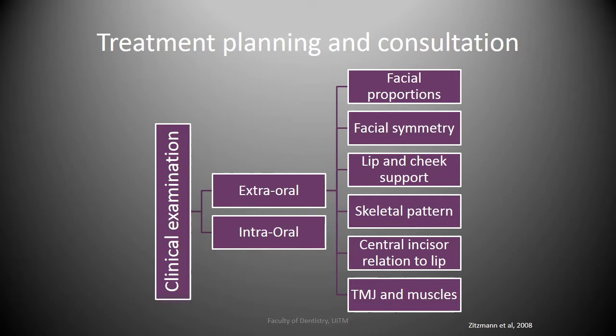Ideally, the lower third or lower facial height should be equal to the other thirds. The second is facial symmetry. The third is the lip and cheek support, whether sufficient or insufficient. The fourth is the skeletal pattern, which could be normal, prognathic, or retrognathic. The fifth is the position of the central incisors, evaluated at rest in relation to upper lip length, and during smiling in relation to the height of the smile line. The sixth is the temporomandibular joint movement and function, in addition to the masticatory muscles.